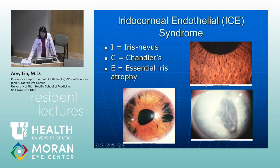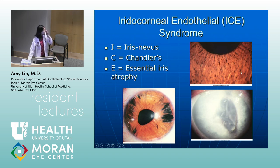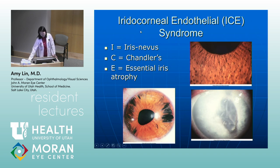There are three subclassifications of ICE syndrome with a built-in mnemonic. ICE-I stands for iris nevus syndrome — you see tiny little bumps on the iris that look like nevi, but this is actually due to contracture of these cells over the iris surface. Chandler syndrome has corneal edema as the main feature. And E stands for essential iris atrophy, where you see atrophic thinning and even holes in the iris.